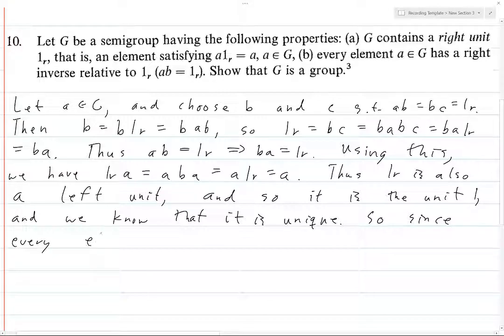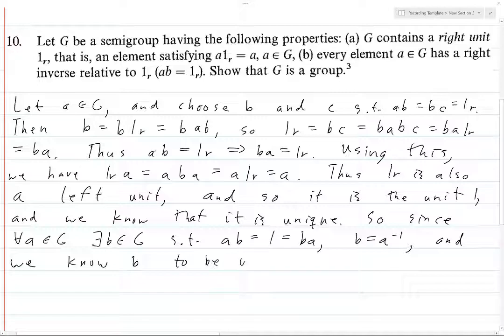So since for all a in G, there is some b in G such that ab equals 1 equals ba, b is precisely a-inverse. And again, we know b to be unique—it's another thing that we prove when we define what a group is. We said if an element has an inverse, it's unique. Hence, G is a group. And so there you go.